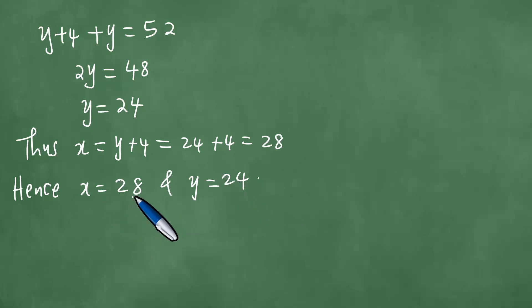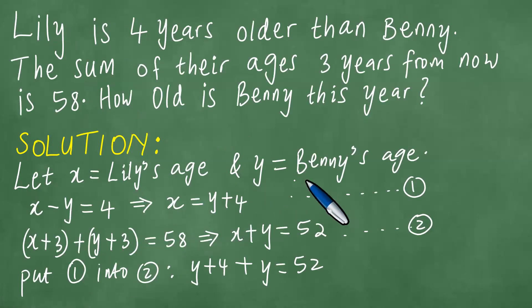Okay. So when you subtract these 28 minus 24, you get four. So obviously this shows that these are the correct answers. Right. Remember that from the question we had the following.